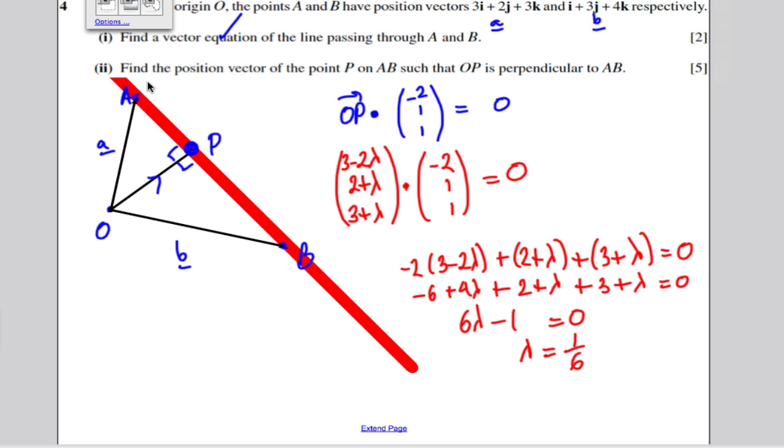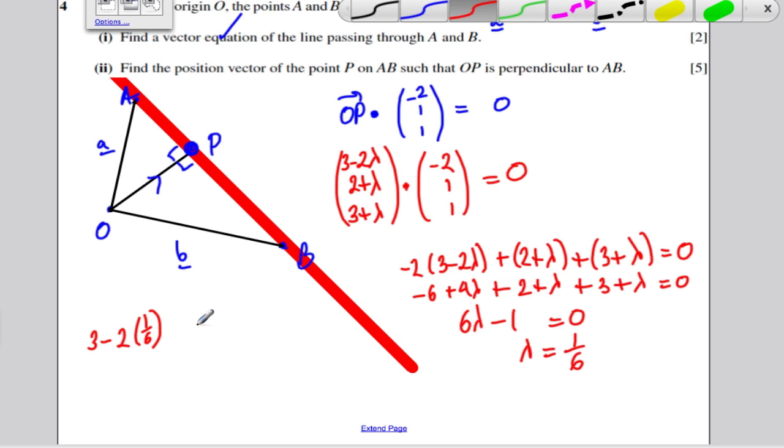But the question 2 asks for the position of P. So just substitute lambda into the equation of the line, which I said was here, and we're going to get the right answer. So we're going to have 3 minus 2 lots of 1/6, and 3 minus 2 lots of 1/6 is 2 and 2/3.